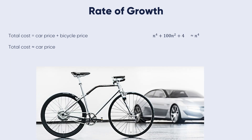Let us assume that we go to a shop to buy a car and a bicycle. If your friend sees you there and asks what you are buying, in general you say 'buying a car,' because the cost of the car is higher than the bicycle. The car price would be like $40,000 and the price of the bicycle is $100, so the total cost would approximately equal the price of the car — we neglect the price of the bicycle.